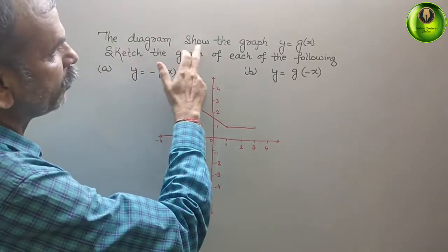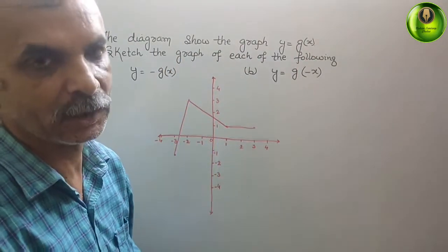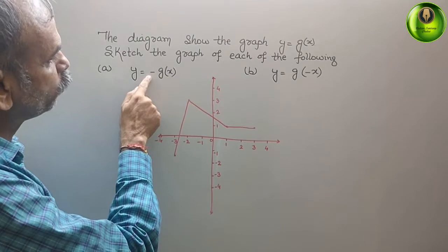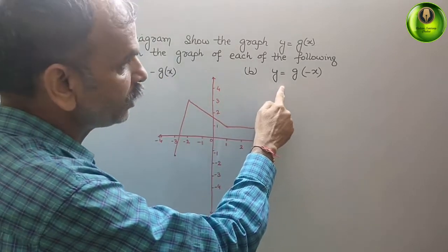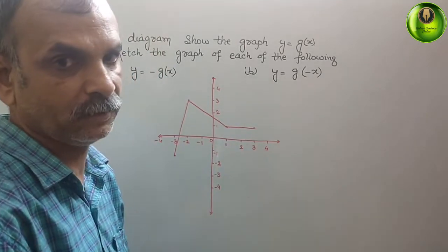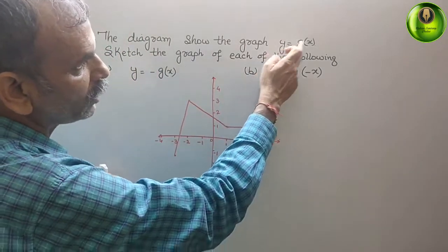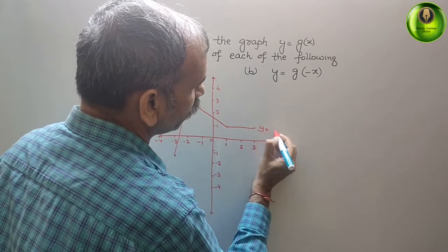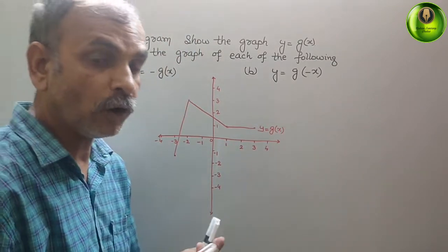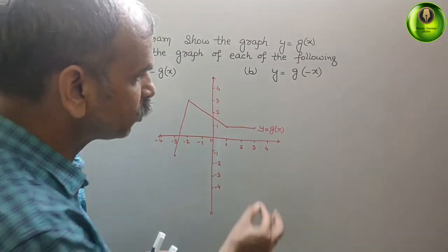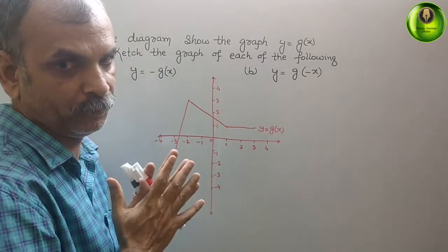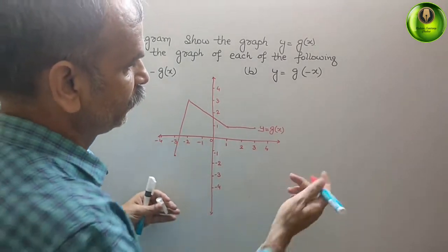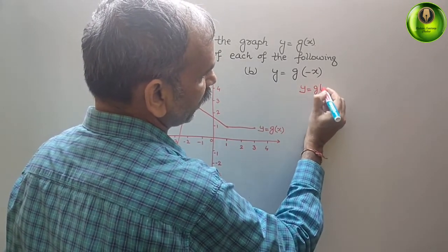The question shows the graph y = g(x). We have to sketch the graph of four transformations. They have given y = -g(x) and y = g(-x). We can see the graph of y = g(x). The first step is to write down the coordinates we can recognize from the graph.